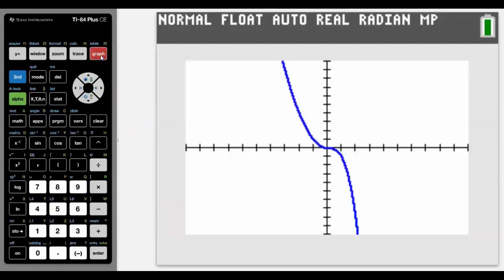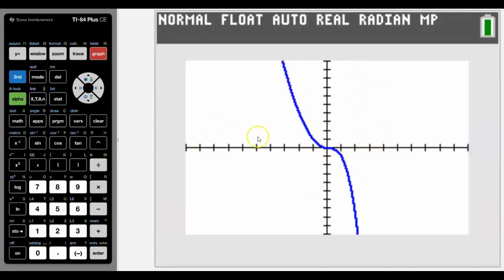When I press Graph, and I've got the window set up as I want, we can see that it gives us this piecewise function. Now you may think, well, hang on a minute, that doesn't look like a piecewise function. It actually looks like a negative cubic.